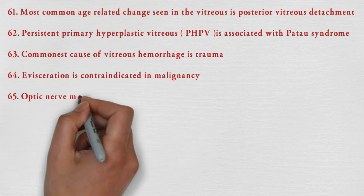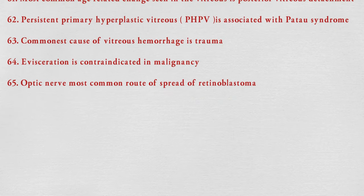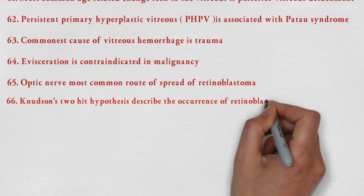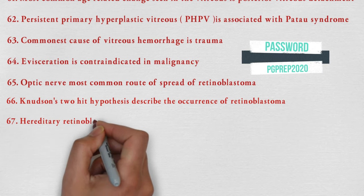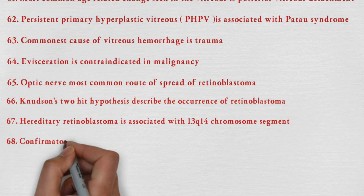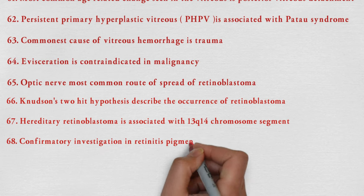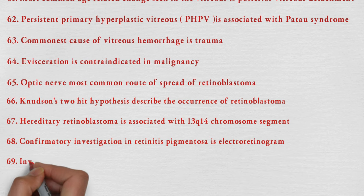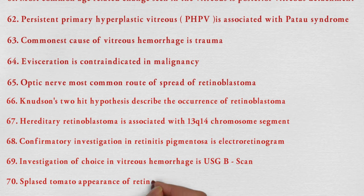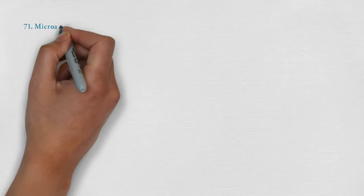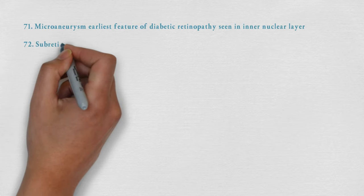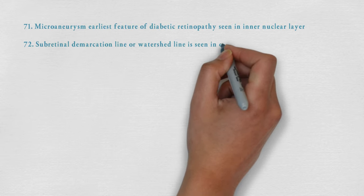Evisceration is contraindicated in malignancies. Optic nerve is the most common route of spread of retinoblastoma. Knudson's two-hit hypothesis describes the occurrence of retinoblastoma. Hereditary retinoblastoma is associated with chromosome 13q14. Confirmatory investigation in retinitis pigmentosa is electroretinogram. Investigation of choice in vitreous hemorrhage is USG B-scan. Splashed tomato appearance of retina is seen in central retinal vein occlusion. Microaneurysm is the earliest feature of diabetic retinopathy, seen in the inner nuclear layer.